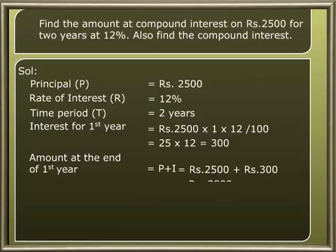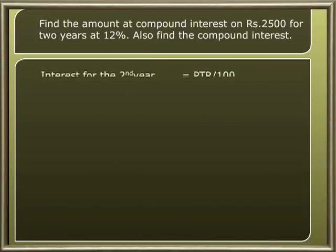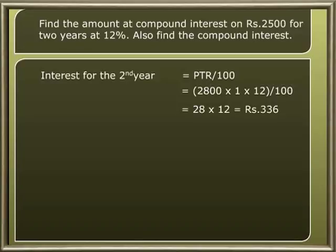The amount at the end of the first year is equal to principal plus interest, which is 2500 plus 300, that is 2800. That becomes the principal for the second year. So the principal for the second year is 2800, rate of interest is again 12 percent, and time period is one year. The interest for the second year using the formula PTR by 100 is 2800 into 1 into 12 by 100, which is equal to 28 into 12, which is rupees 336.